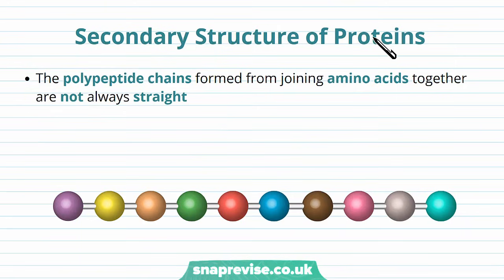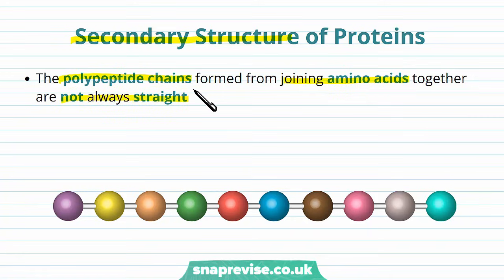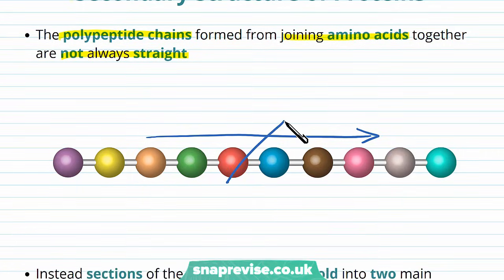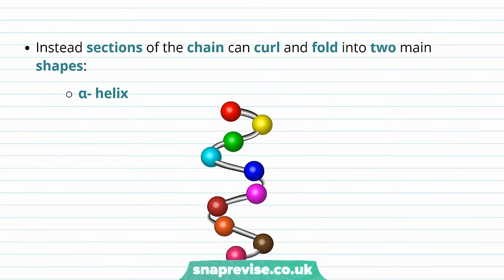After the primary structure, the next level of organisation of a protein is the secondary structure. The polypeptide chains formed from joining amino acids together aren't always a straight line. When we talk about condensation and hydrolysis, we describe the polypeptide as just a continuous long line, but it's actually not often in this format. Instead, the polypeptides organise themselves and fold up, and sections of the chain can curl and fold into two main structures.